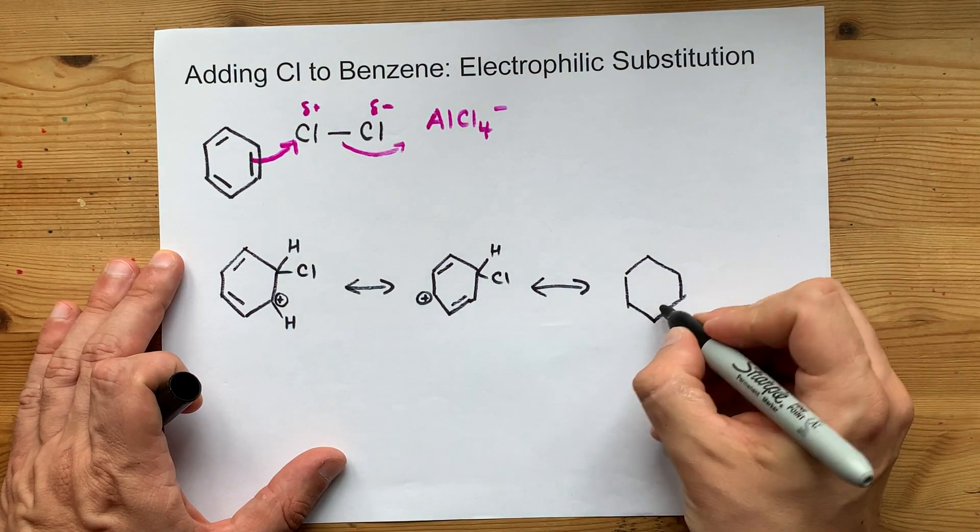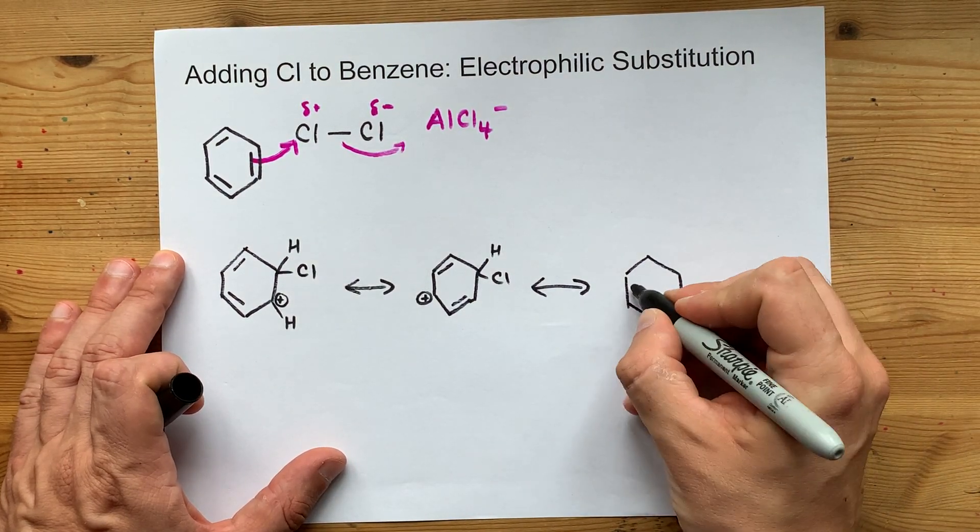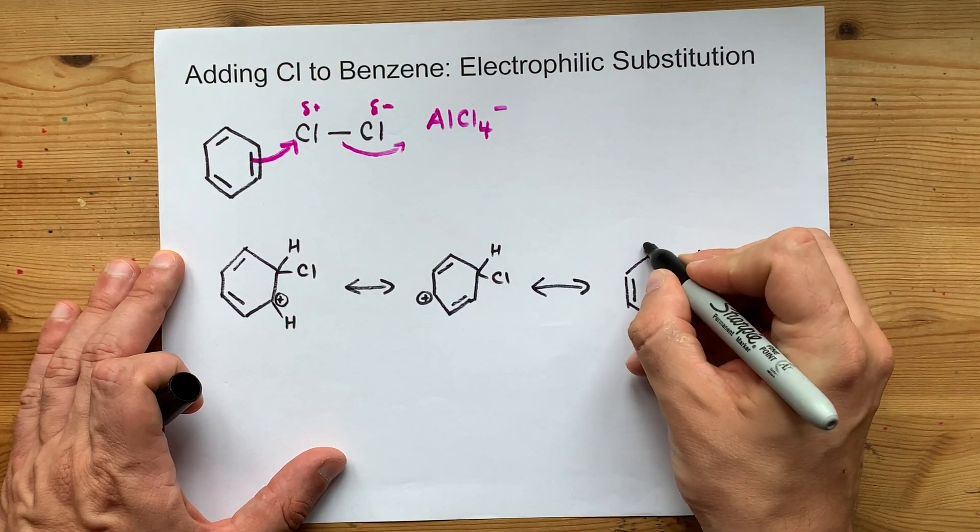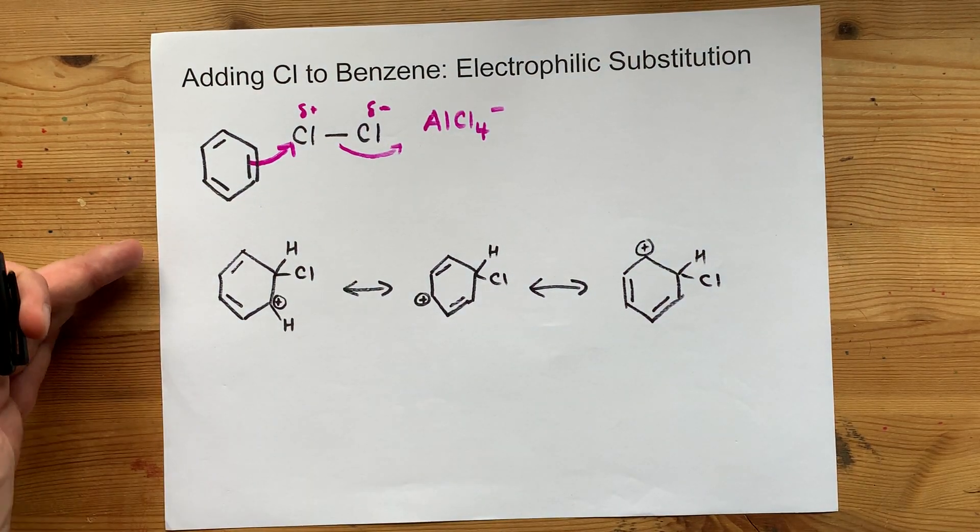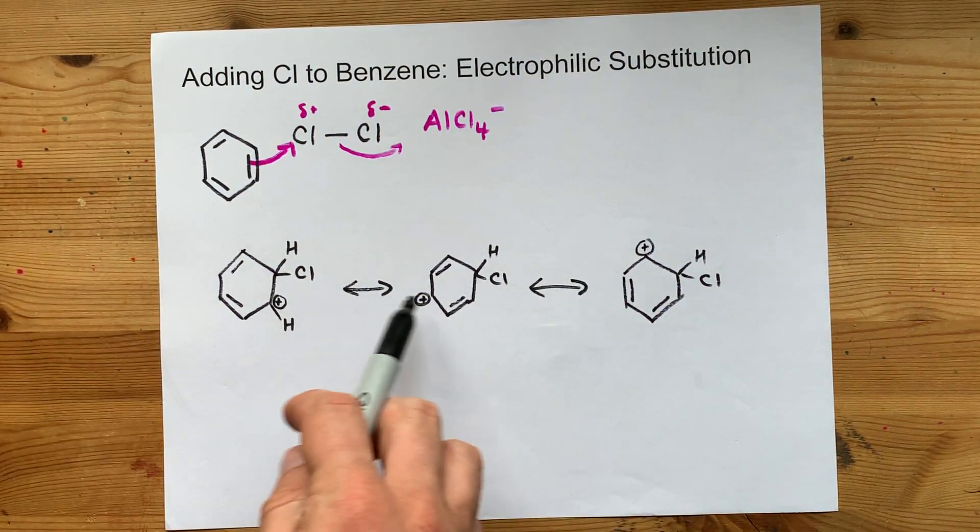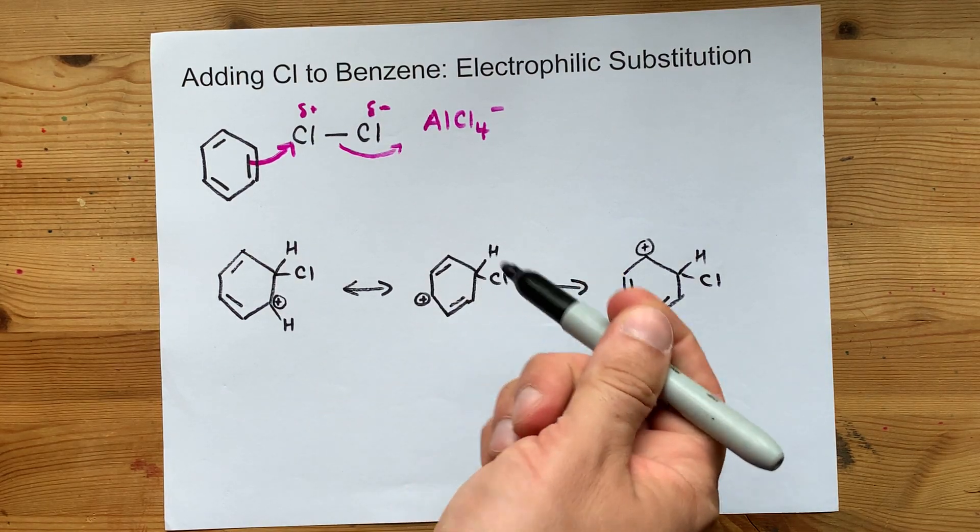Six-membered ring still intact. Double bond here, double bond there. Hydrogen and chlorine as it was, and your positive charge is there. This intermediate is stable because of the delocalization of the positive charge.